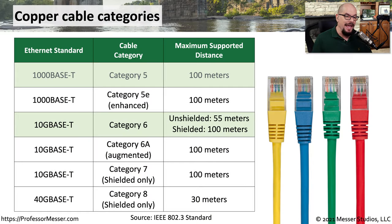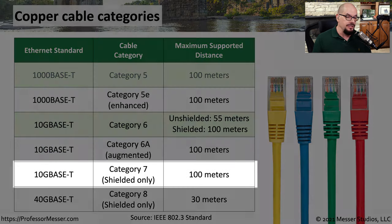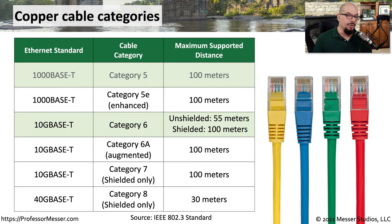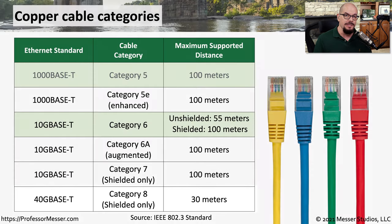If you're using Category 6a — the A means augmented — you can still run 10GBaseT to a distance of 100 meters. And if you have Category 7, which is a shielded type of cable, it will also use 10GBaseT for 10 gigabit ethernet up to a 100 meter distance. And if your requirements are for 40 gigabit ethernet using the 40GBaseT standard, then you want to use Category 8, which is a shielded cable with a maximum supported distance of 30 meters.